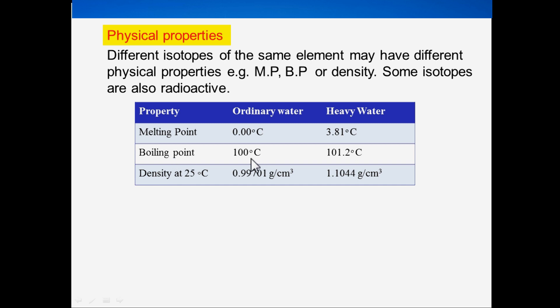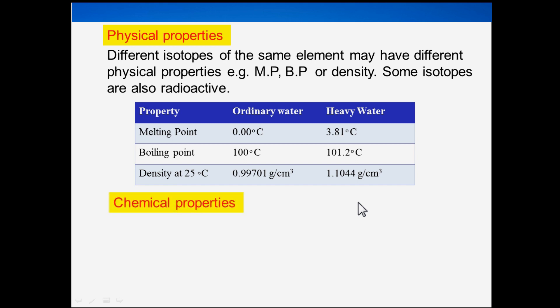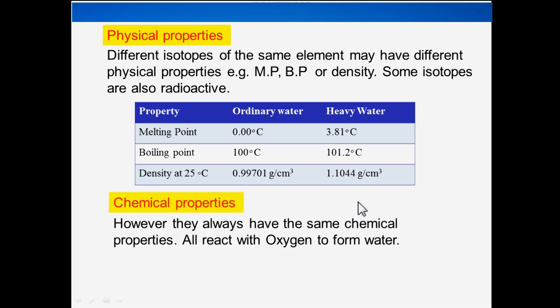The boiling point is 100 degrees Celsius for ordinary water and 101.2 degrees Celsius for heavy water. However, isotopes always have the same chemical properties.